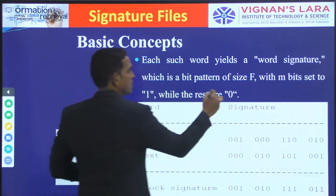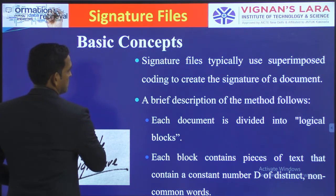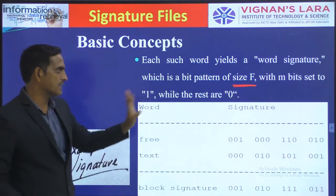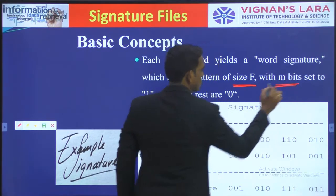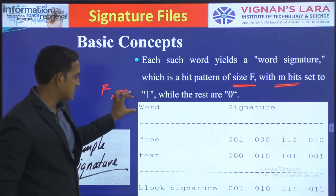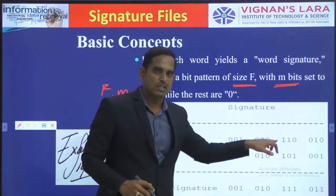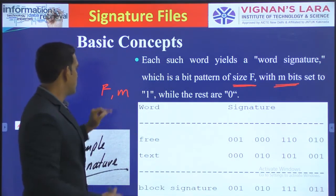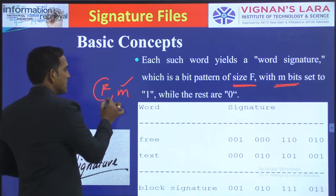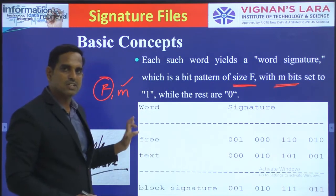The total number of bits for each word signature is the design parameter f, and the number of bits set to 1 is the design parameter m. So for each word we create a bit pattern where f determines the total number of bits and m determines how many bits are set to 1.